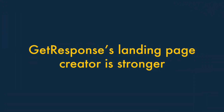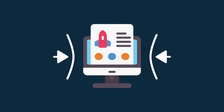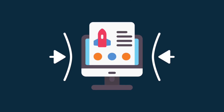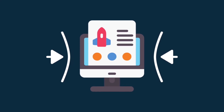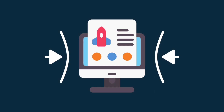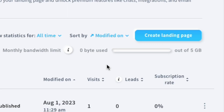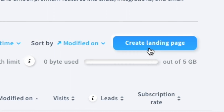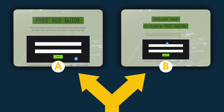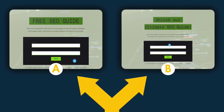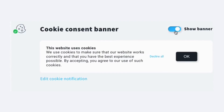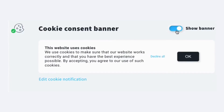Reason six: GetResponse's landing page creator is stronger. Both GetResponse and MailChimp provide users with landing page creation tools that can be used in conjunction with online ad campaigns. However, the GetResponse ones are stronger. Unlike MailChimp's, they provide full split-testing features, and they also cater better for GDPR privacy requirements.